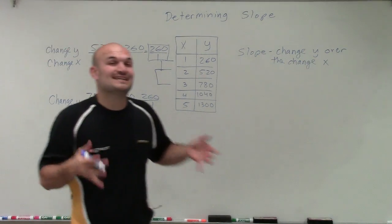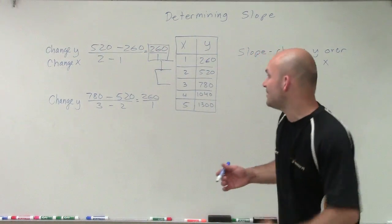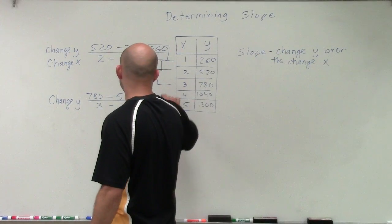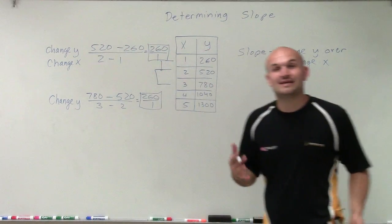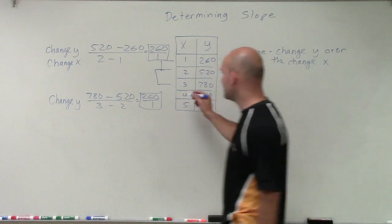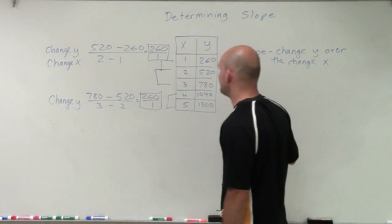So again, we have the exact same change. When I do the change of y over the change of x, I'm producing the same value. Now if this is going to be constant, then this is going to be our slope. Let's check one more point. Let's do 5 and 4.